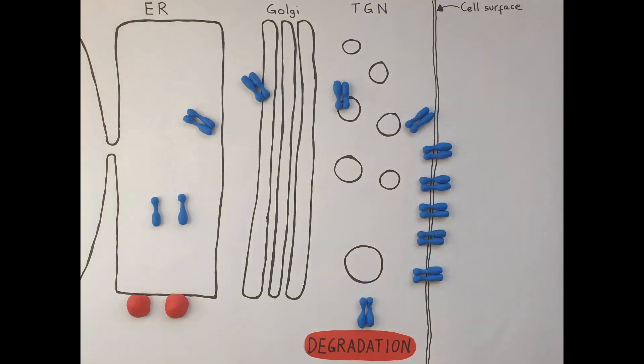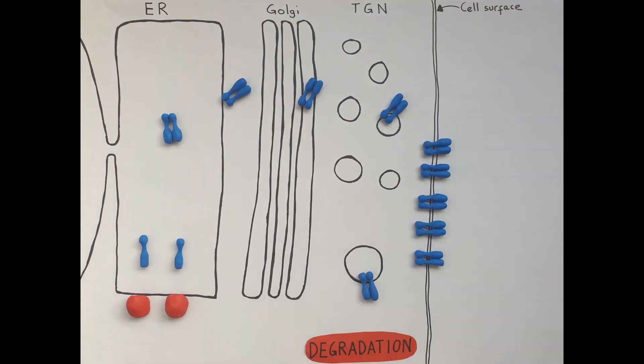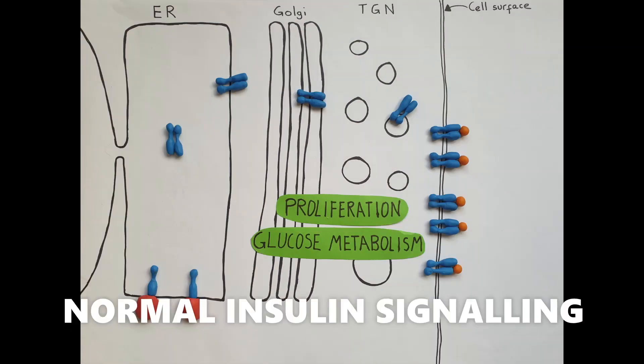Healthy cells maintain a constant number of insulin receptors at their surface by balancing their addition and removal.